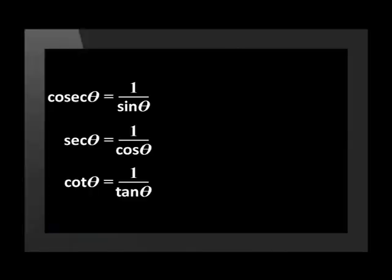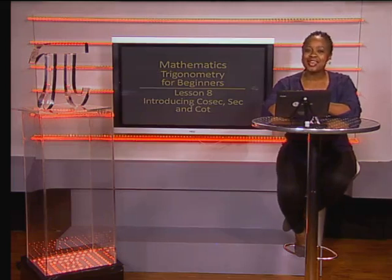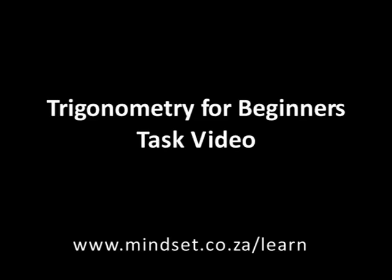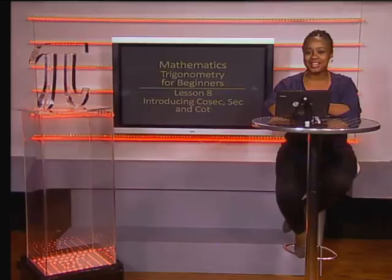We have taken a brief look at reciprocal ratios and how they can be used in trigonometry. You will need to learn these off by heart, so let's look at them one more time. Cosec is the reciprocal of sine. Sec is the reciprocal of cos. And cot is the reciprocal of tan. Thank you for joining us, Grade 10s. Please look at the task video for more practice on reciprocal ratios. You will also find more information on trigonometry at www.mindset.co.za/learn. Goodbye.